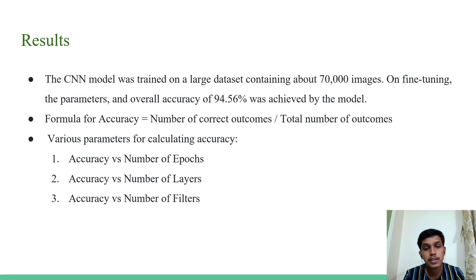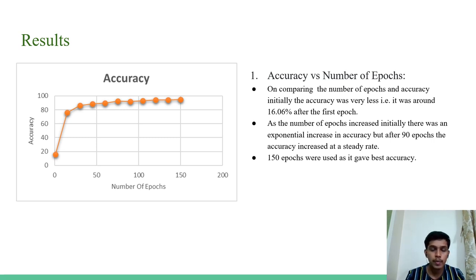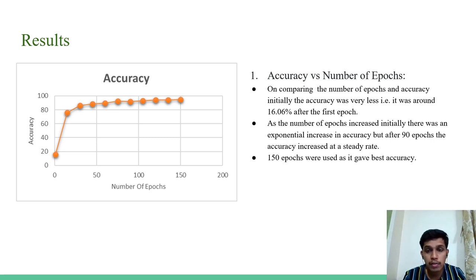First, we plotted accuracy versus number of epochs. Initially the accuracy was very low at 16.6% after the first epoch, but it gradually increased. As the number of epochs increased, there was initially an exponential rise, but after 90 epochs the accuracy increase rate became very steady. We chose 150 epochs for our system, as this gave the best accuracy — using more than 150 epochs would cause the model to overfit to the training data and not perform well on testing data.